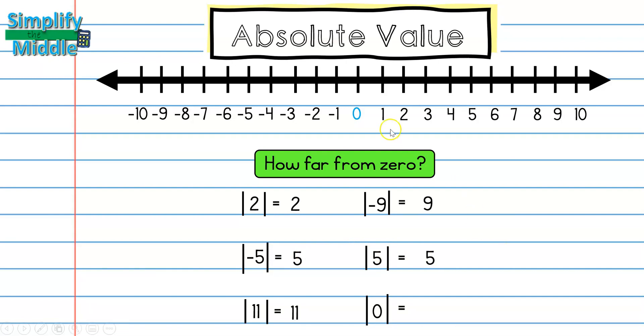Finally, we know that 0 is not any place value away from 0. So the answer here is 0. So the absolute value of 0 will always be 0 itself.